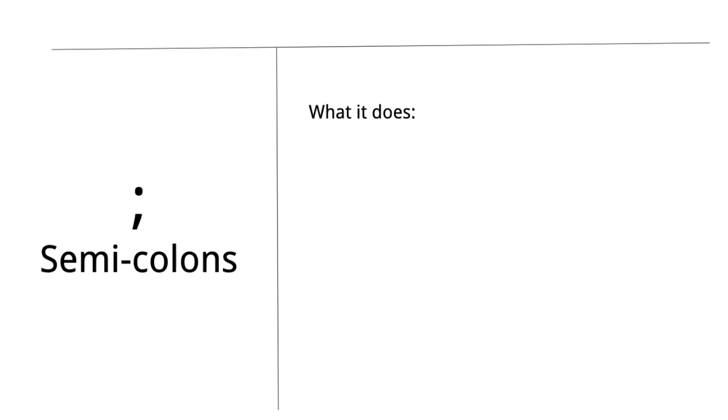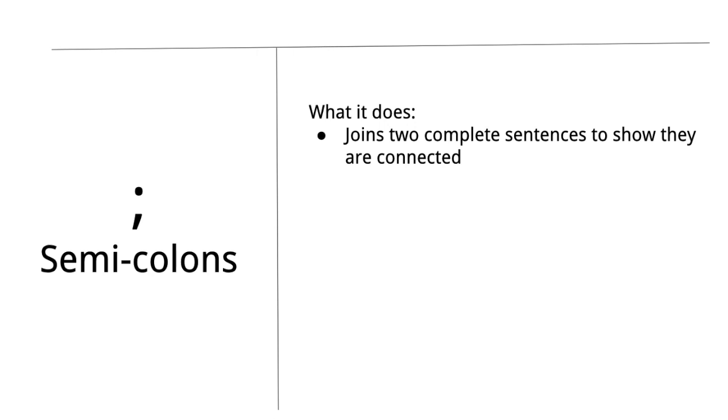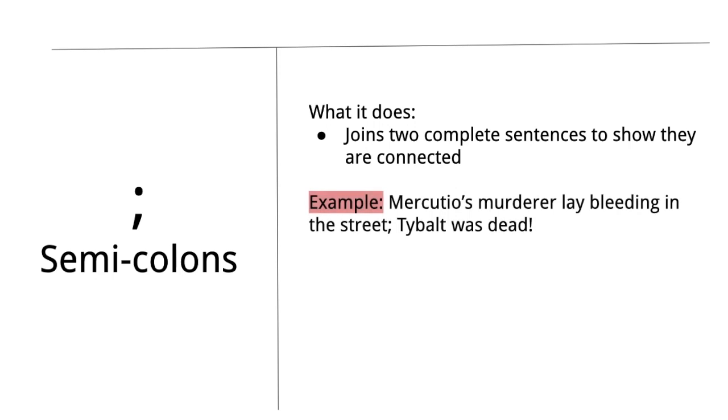A semicolon's job is it joins two complete sentences to show that the two ideas are in some way connected. For example: 'Mercutio's murderer lay bleeding in the street; Tybalt was dead.' These are two complete sentences — they can stand on their own. A period could also go anywhere a semicolon could go, and without any sort of punctuation, it's a run-on sentence. It's just a really punchy way to connect two ideas that's more conjunctive, more together than a period.